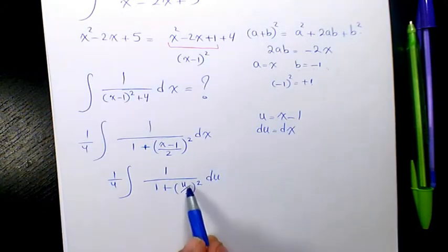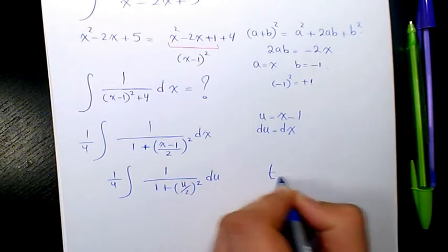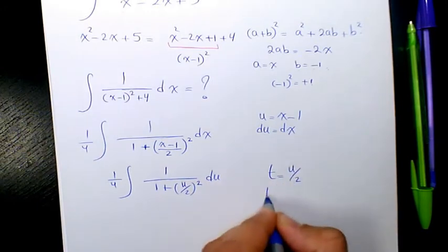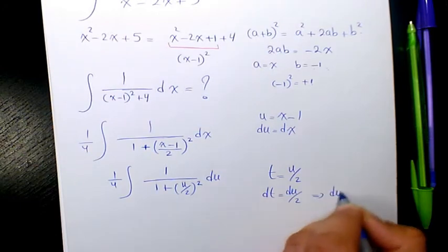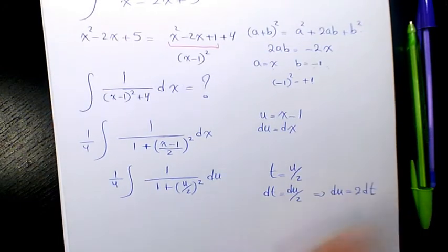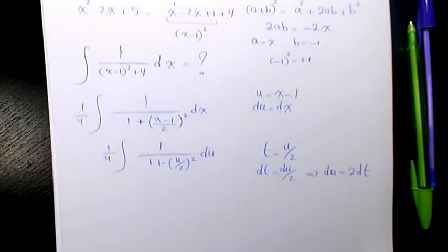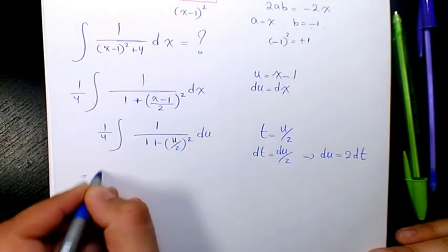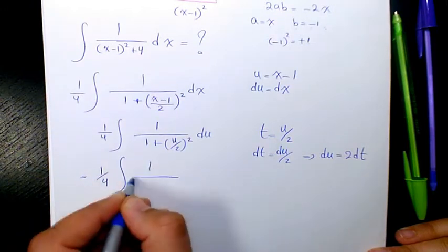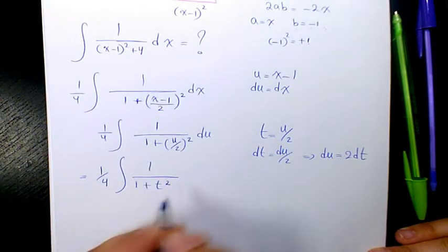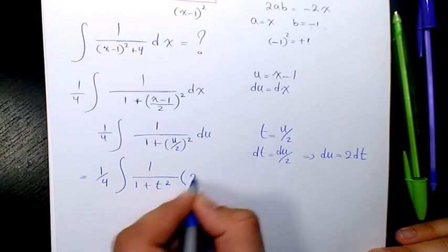And I need to do another substitution. Let's say t equals u over 2. dt will be du over 2, which means du equals 2 dt. And that's going to be 1 over 4 times 1 over 1 plus t squared, 2 dt.